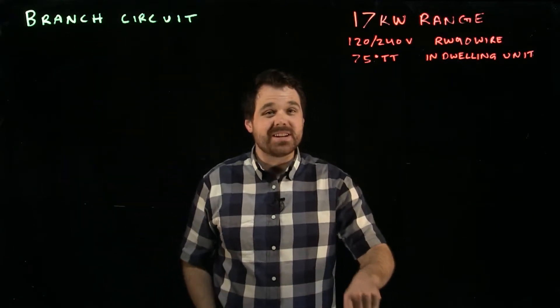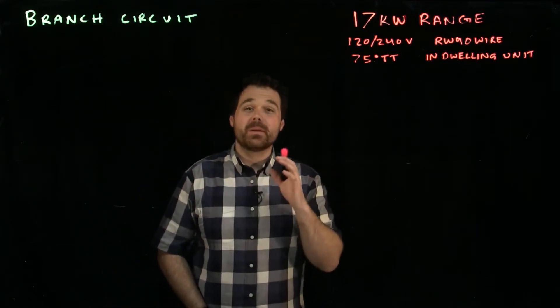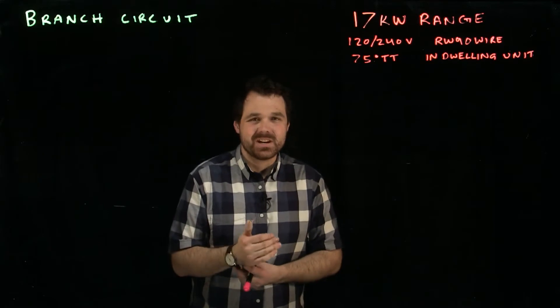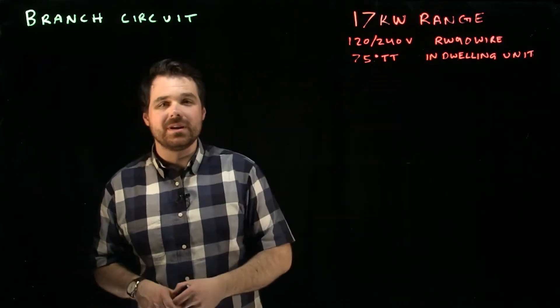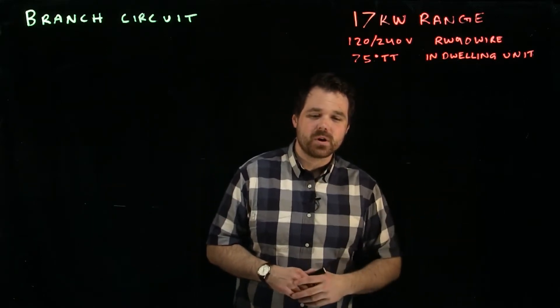So it's important to remember what the definition is, a branch circuit from section zero of the code. A branch circuit is from the final overcurrent device to the point of utilization. So in this case, from our breaker in our panel in a house, because we're in a dwelling unit, to the actual range itself. So we're sizing that wire and that overcurrent device.